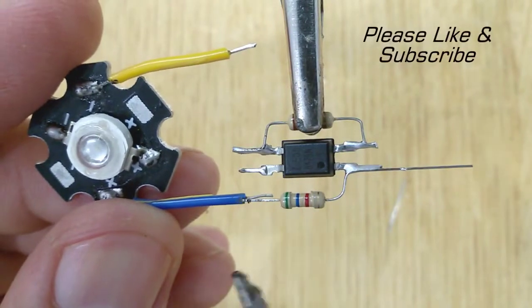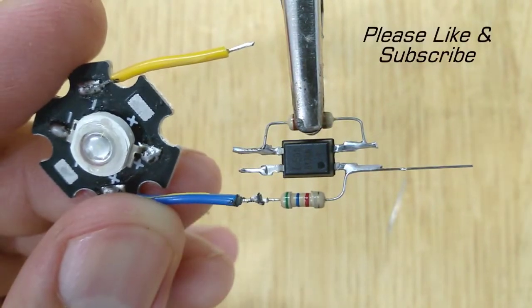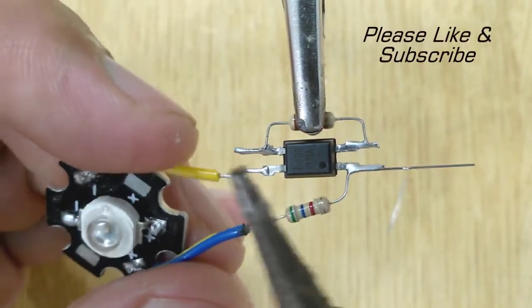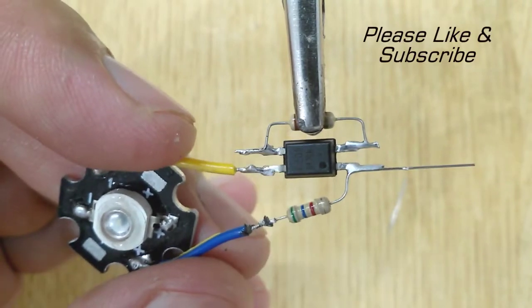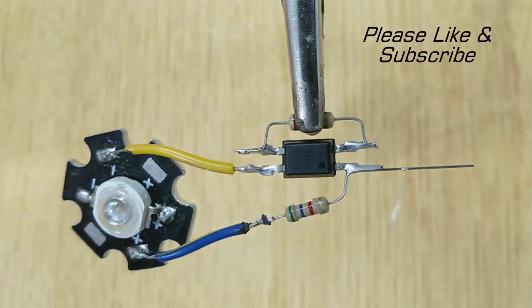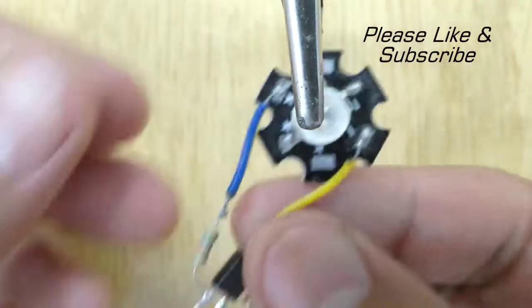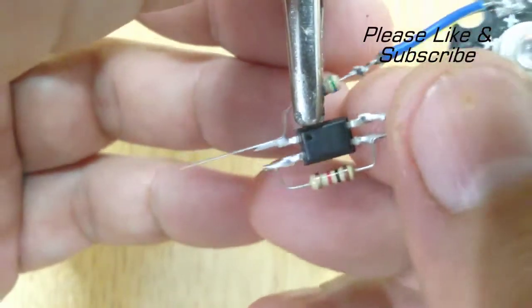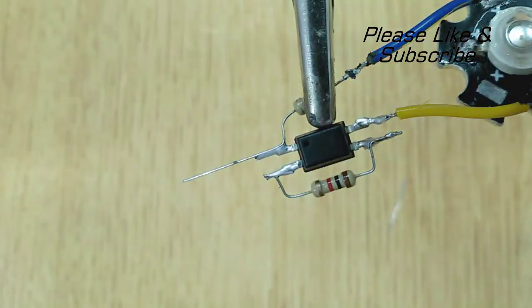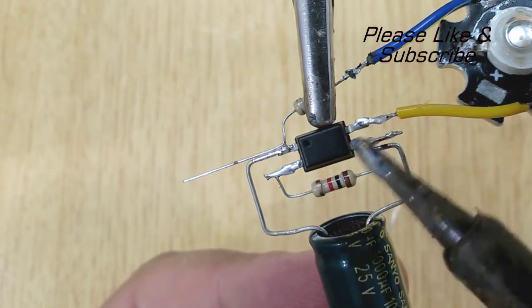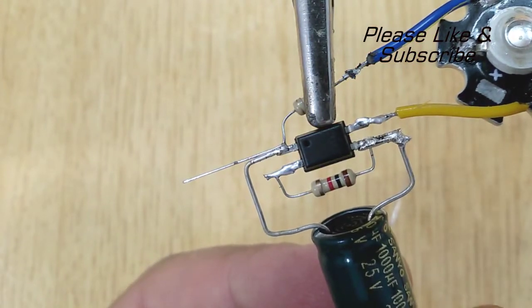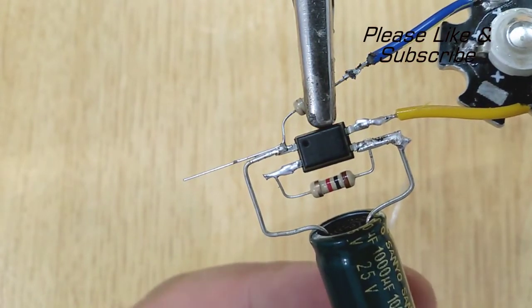Now solder the positive pin of LED with the 5.6K ohms resistor. And solder the negative pin of LED with the fourth pin of PC817. And at last solder 1000 microfarad capacitor with the first and third pin of PC817.